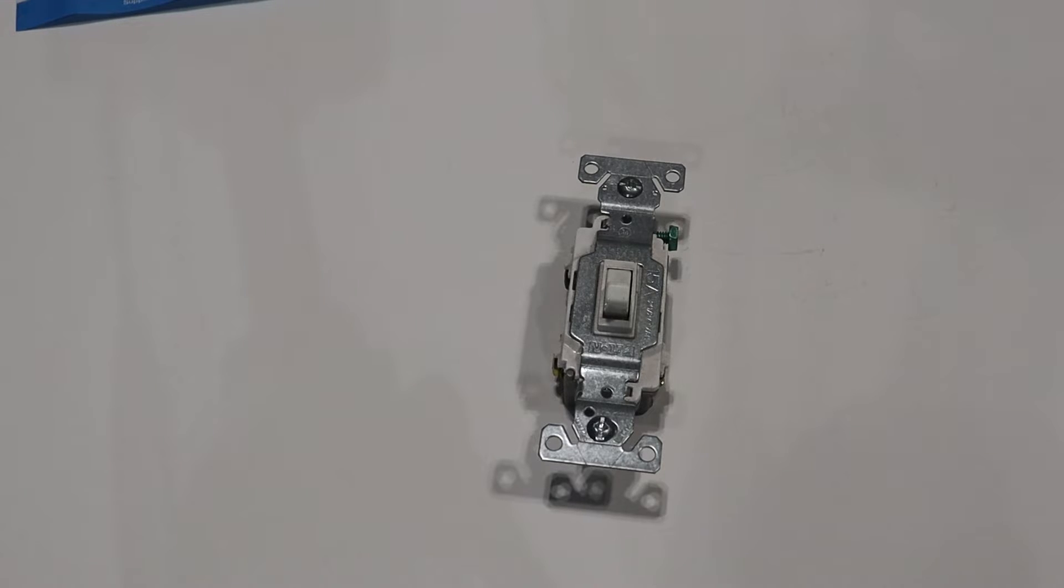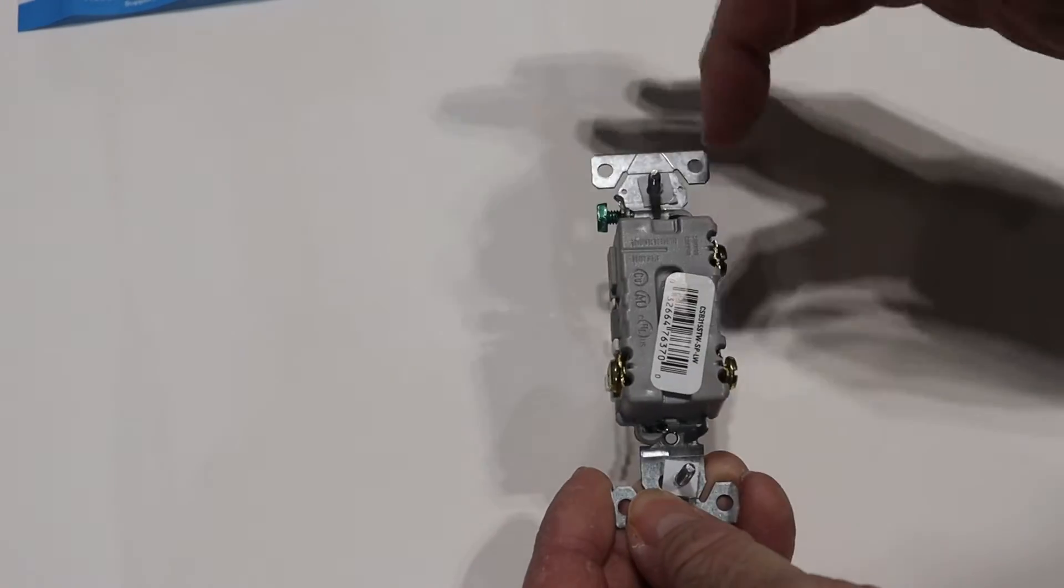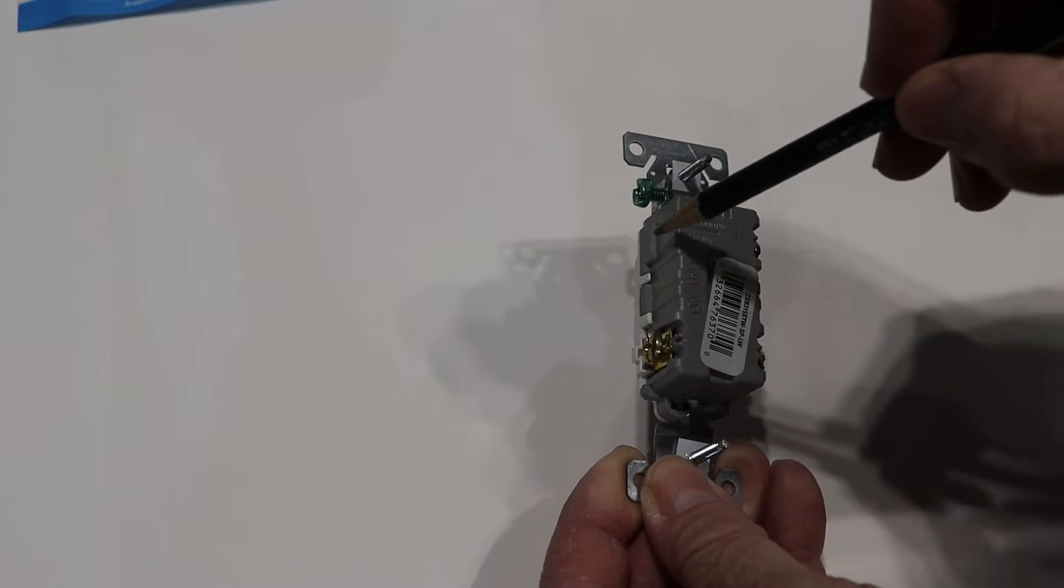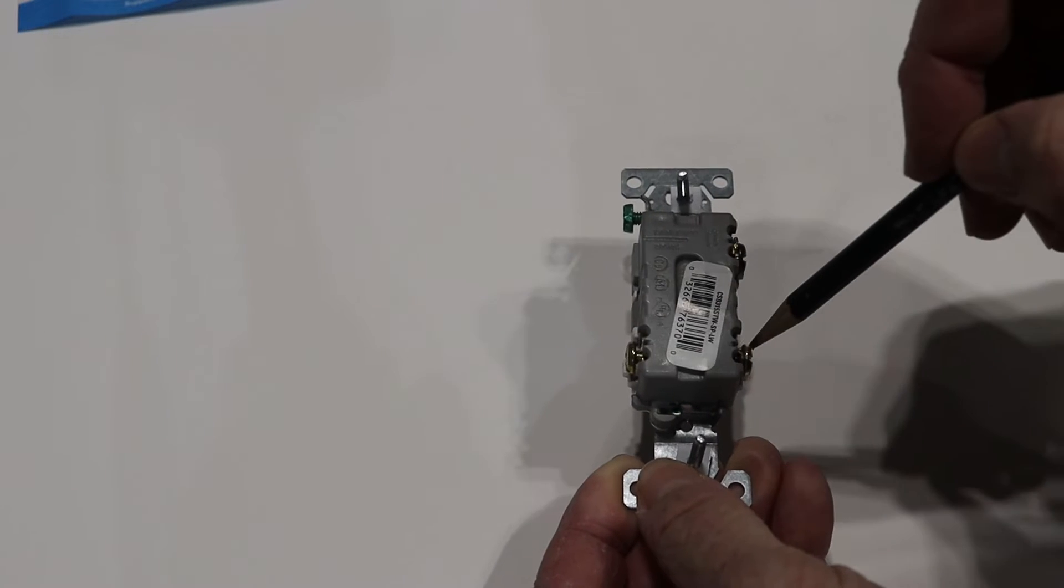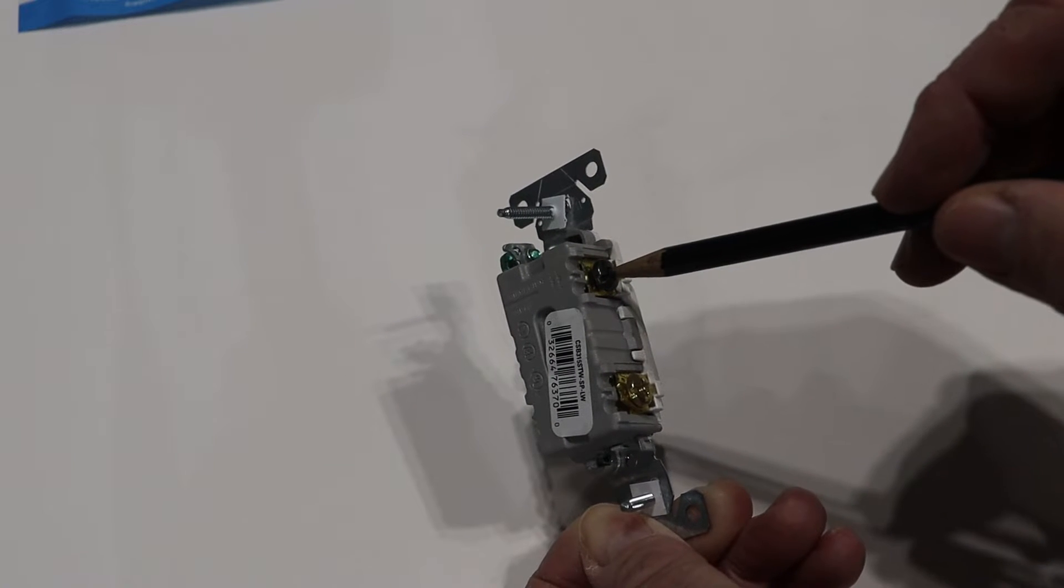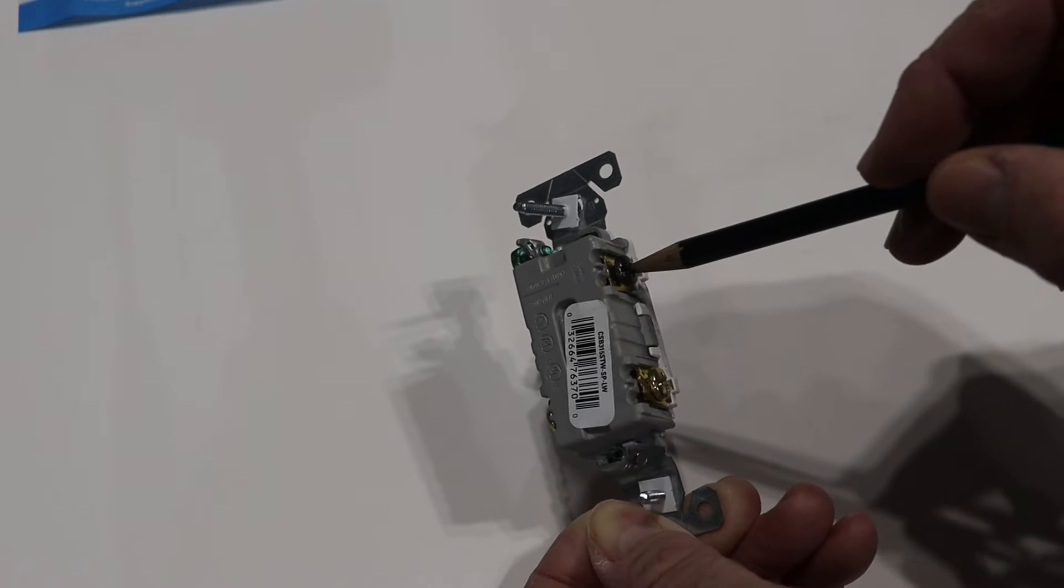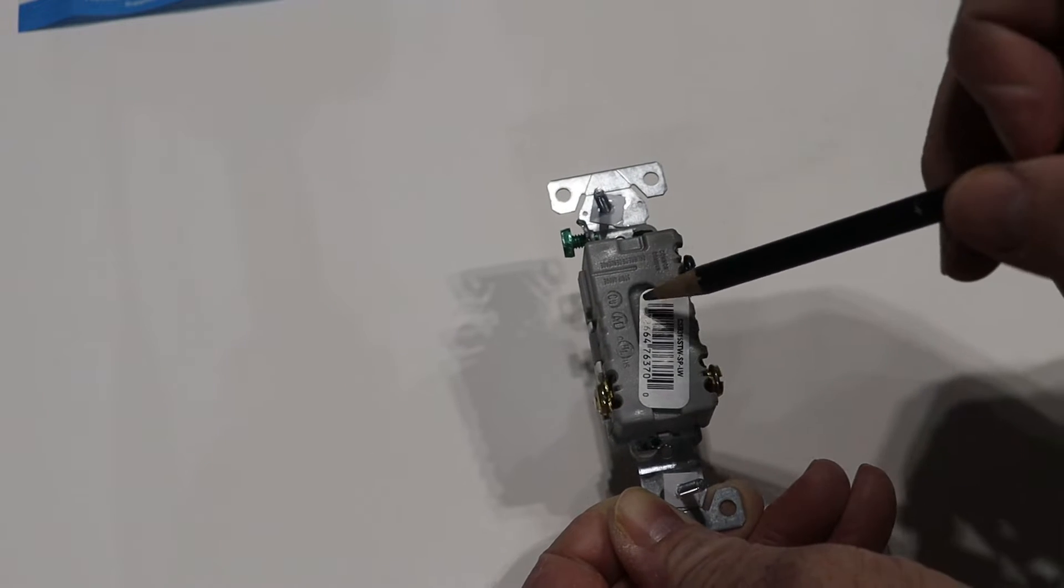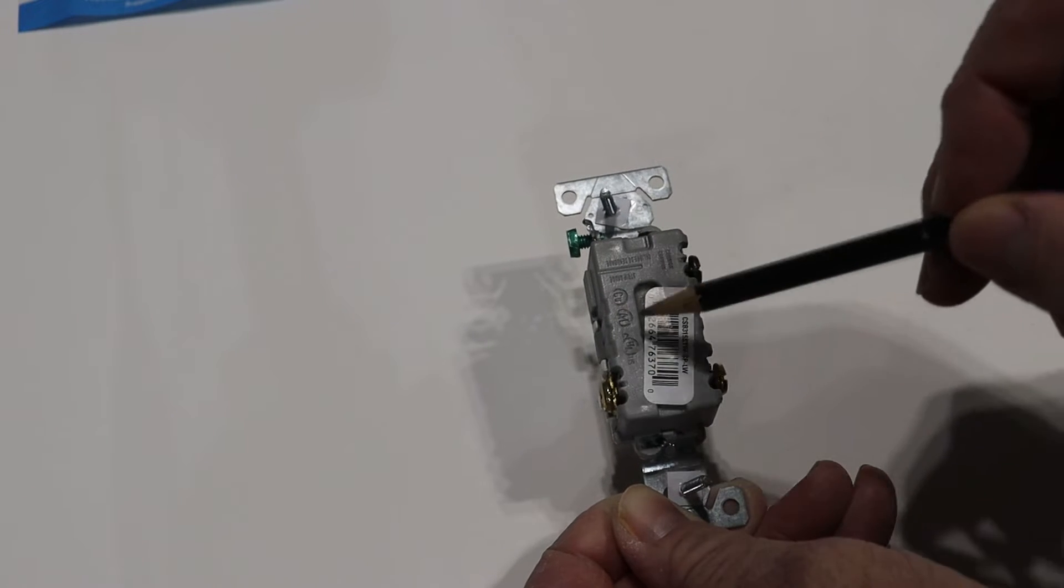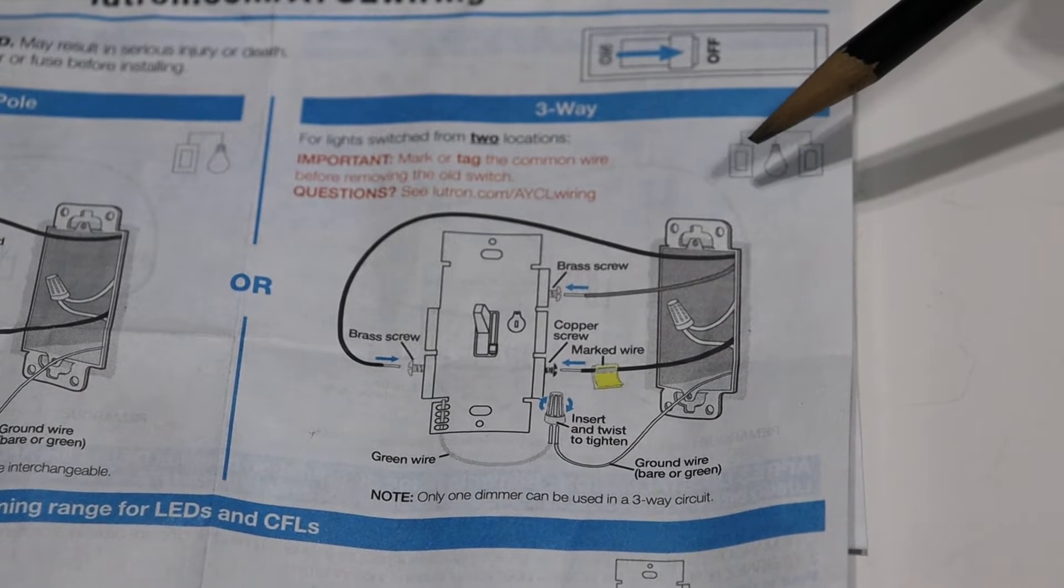A three-way switch is obviously a lot different. It does have a ground screw, but you'll notice it has three different screws. And instead of one brass screw being here and one being here, now your brass screws are at the bottom. And the reason is that this screw right here, this black screw, is where your hot wire is actually going to connect up to. And then what's going to happen is, depending on the position of the switch, it's either going to send power to this screw or it's going to send power to this screw. So where you hook up the wires is extremely important.